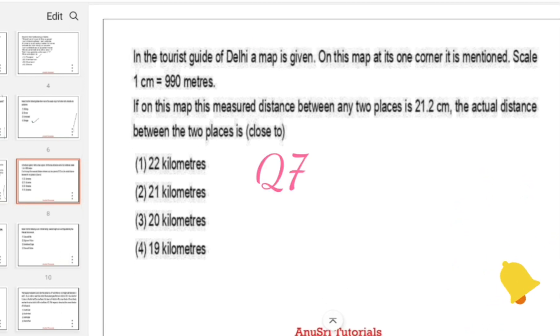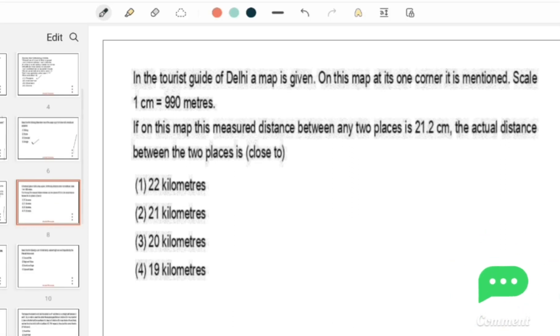In the tourist guide of Delhi, a map is given. On this map, at one corner it is mentioned: scale 1 centimeter equals 990 meters. If on this map the measured distance between any two places is 21.2 centimeters, the actual distance between the two places is 21 kilometers, which is the right answer.